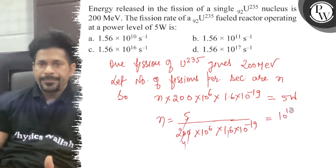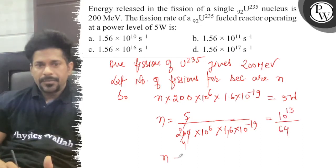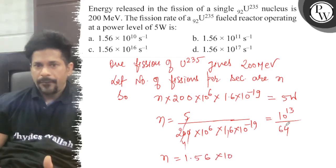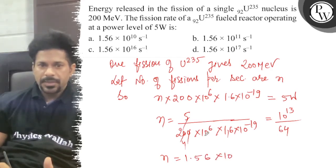Divide by, so 64. So n will be 1.56 times 10 to the power 12, 13 here, 13 plus